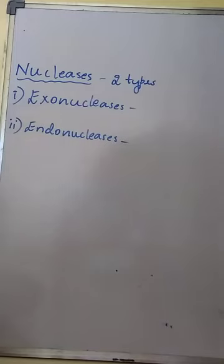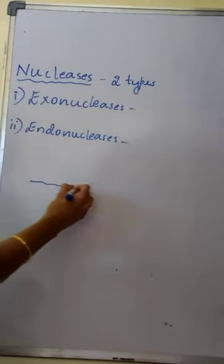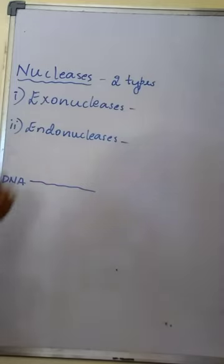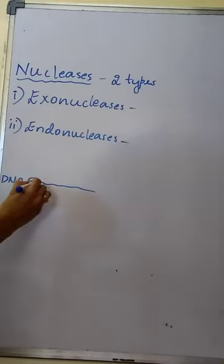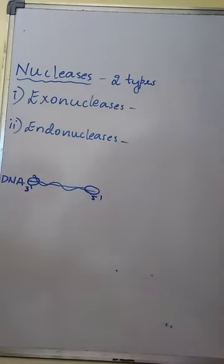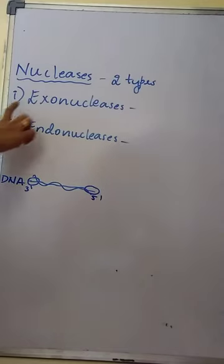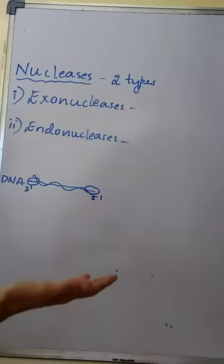Exonucleases are enzymes or nucleases which remove the nucleotides from the ends of the DNA — either the 3' end or the 5' end. Hence they are called exo, because exo means outside; they remove the nucleotides from the sides or from the ends.